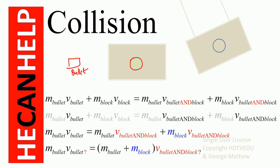Once the bullet is fired into the block, it stays inside and rises to height h. Because the bullet is colliding with the block, we can use conservation of momentum. Whenever we have collisions, we can apply conservation of momentum. We have two masses — the bullet and the block — each with their own velocities. The block's velocity before collision is zero since it is at rest.